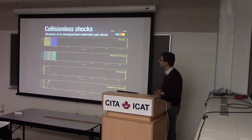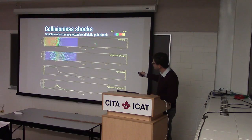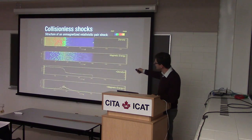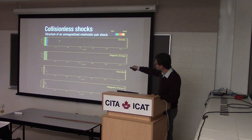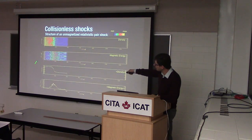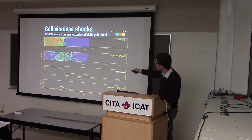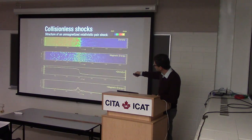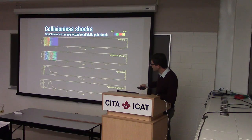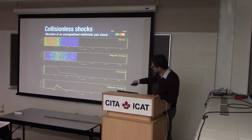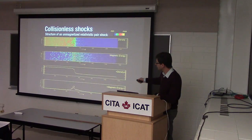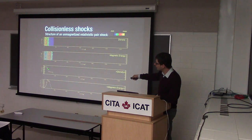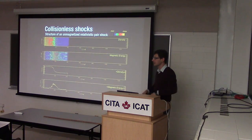Here's an example of a relativistic shock. A flow is injected towards a reflecting wall, creating a shock. You can see a jump in density that propagates, and filamentary magnetic fields in the shock transition region. The magnetic energy rises to a peak right in the middle of the shock and then falls off behind it. All of this magnetic energy is self-generated — nothing was put in by hand — and it starts to dissipate afterwards and disappears in the downstream.